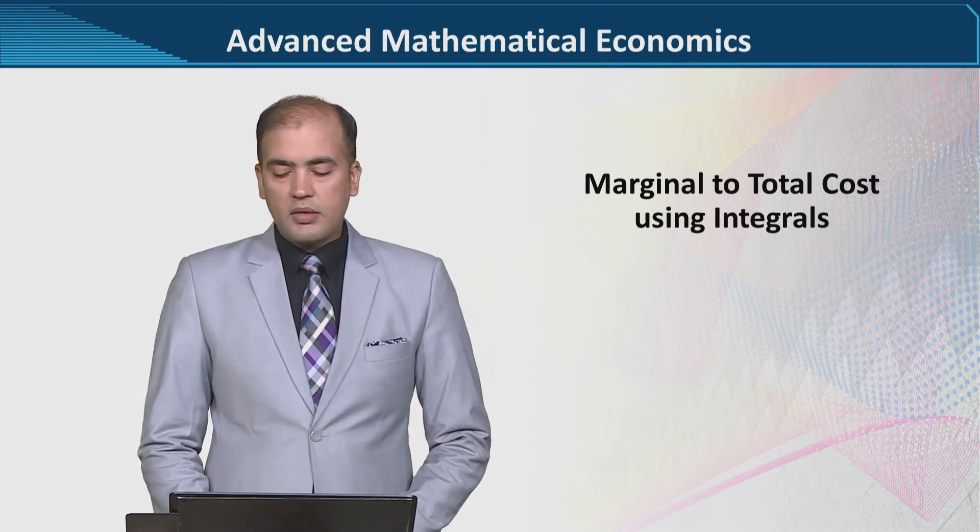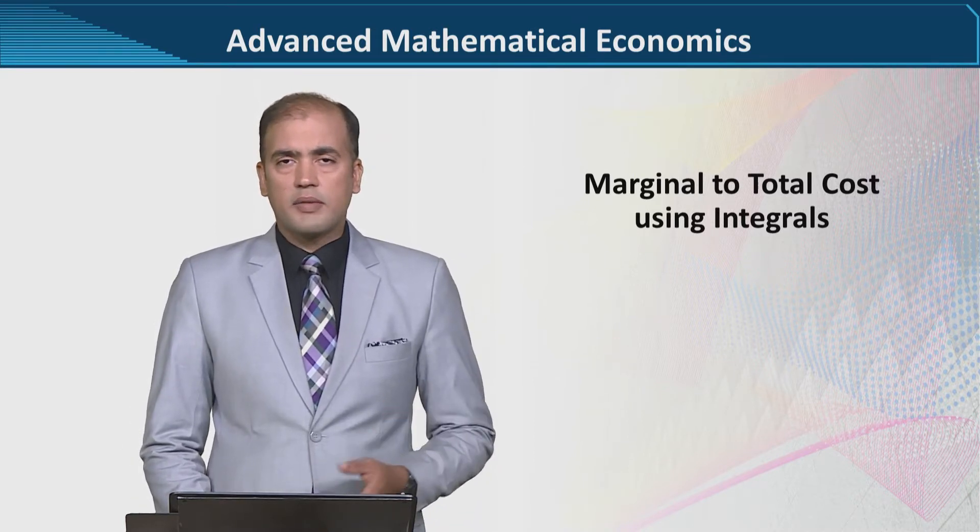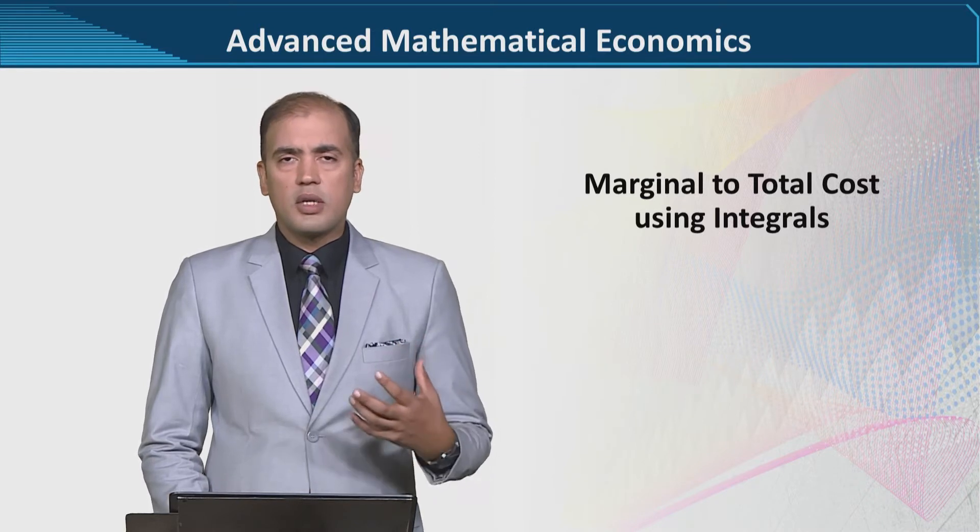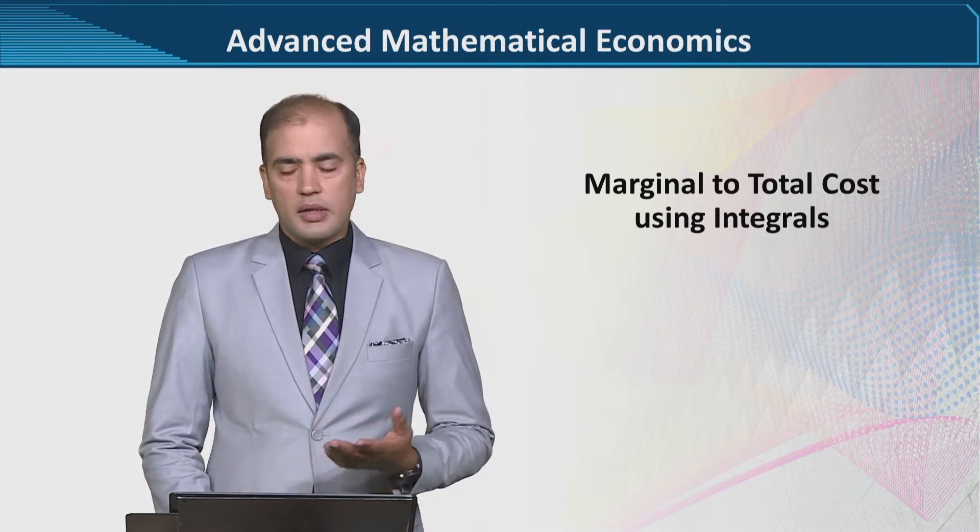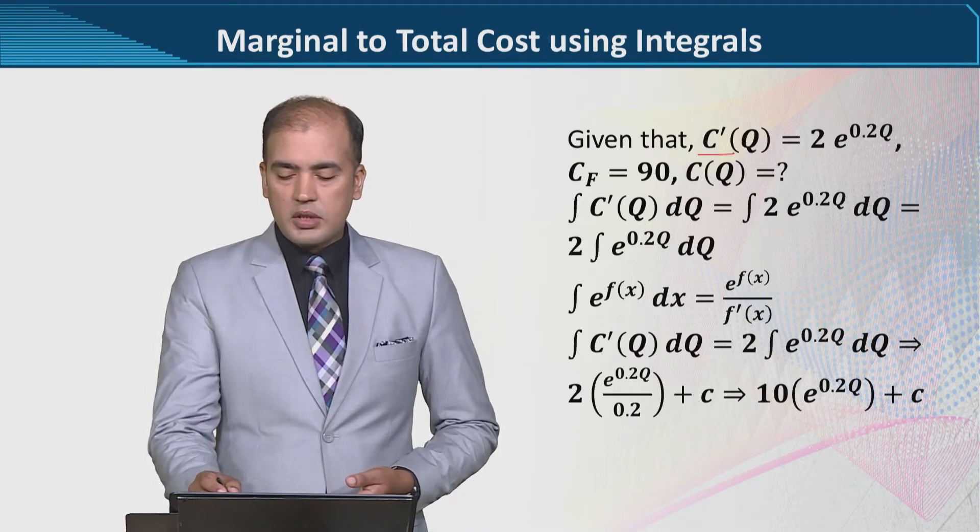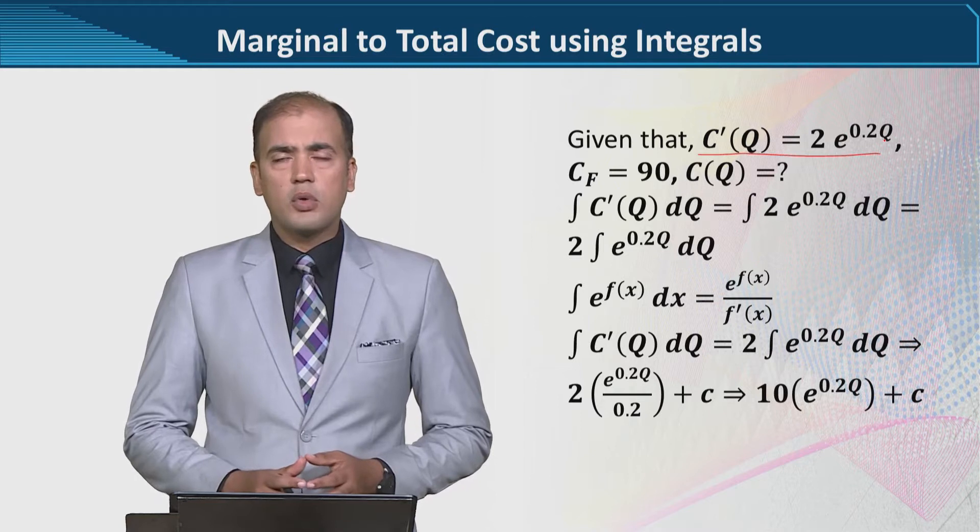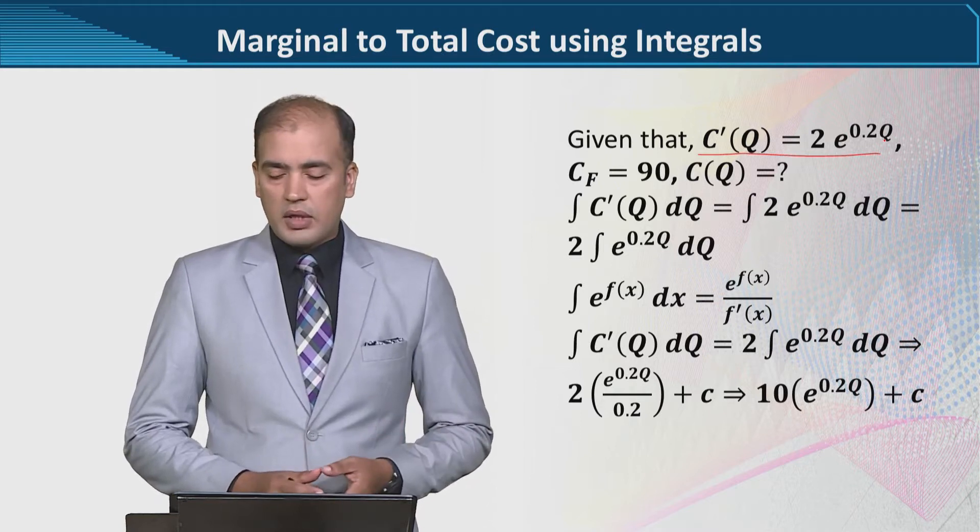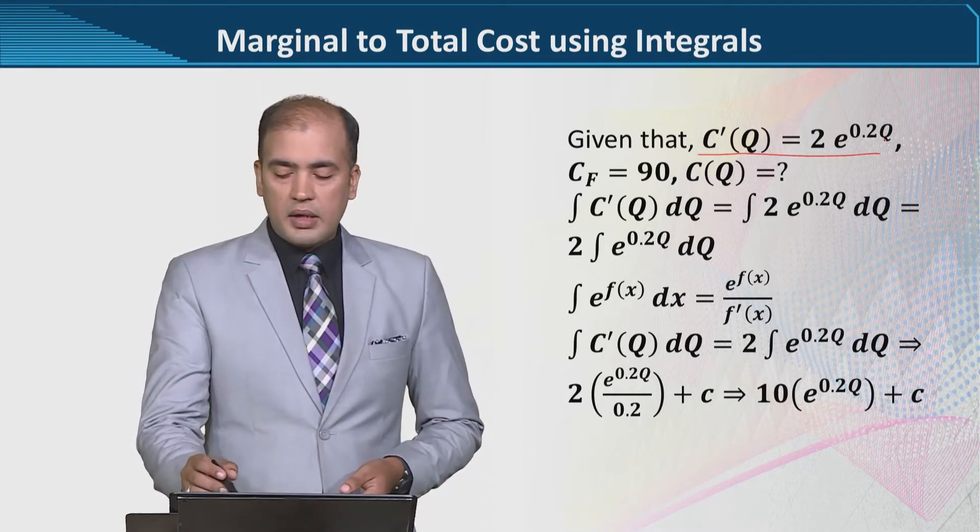As you can see, we are talking about the cost function. We are going to convert a marginal cost function into its total version. Let us see how we can do that. We have this given information, and this is borrowed from the book of Alpha C Chiang. We can easily find that in the examples.